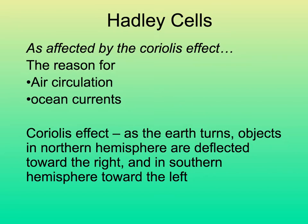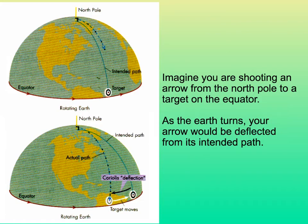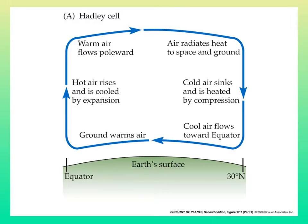Hadley cells are also affected by the turning of the earth — the Coriolis effect — which causes ocean currents and air circulation patterns. As the earth turns, things in the northern hemisphere are deflected toward the right, and in the southern hemisphere toward the left. Imagine you're an archer shooting an arrow from the north pole toward the equator; as the earth turns, your arrow will be slightly deflected. In a Hadley cell cross-section, near the equator the ground warms the air, hot air rises and expands, warm air moves toward the pole, then cold air sinks and is heated, and cool air moves back toward the equator.